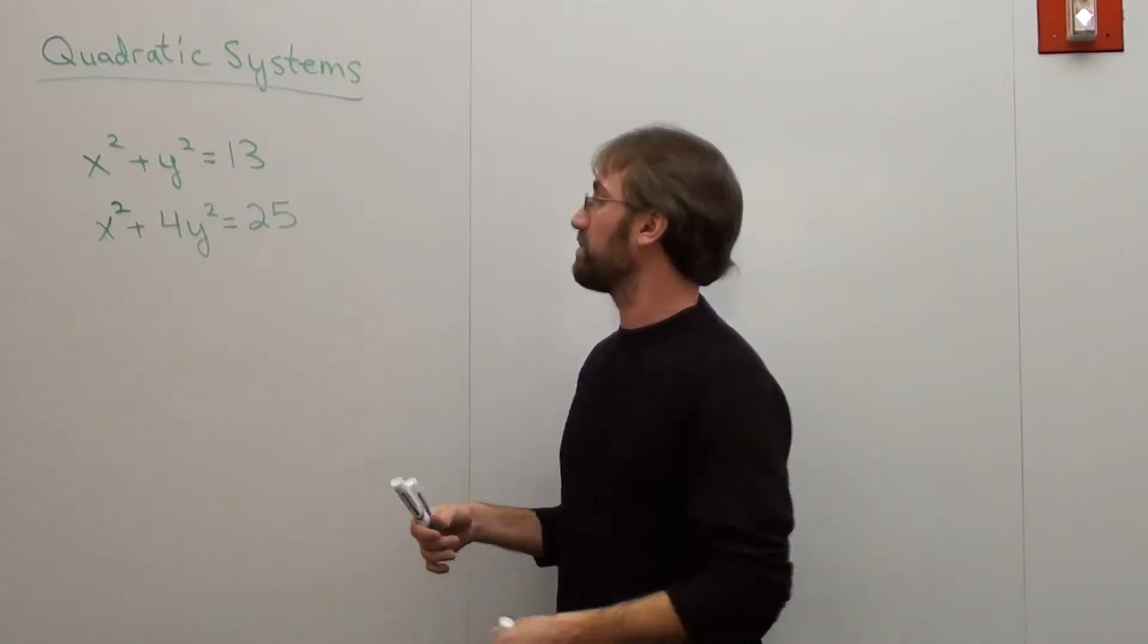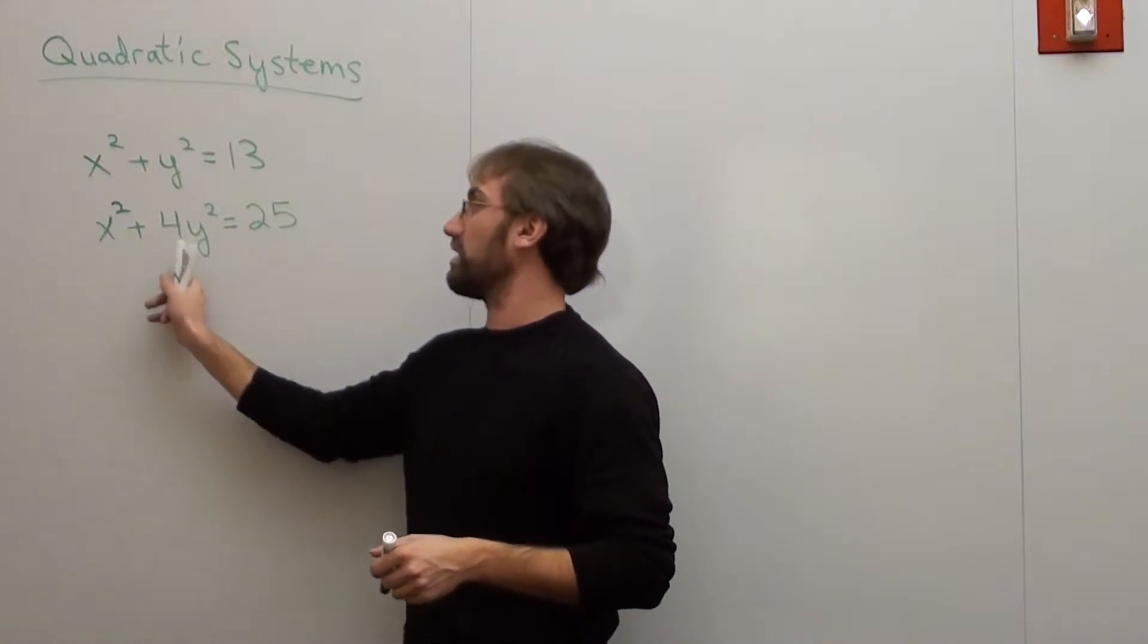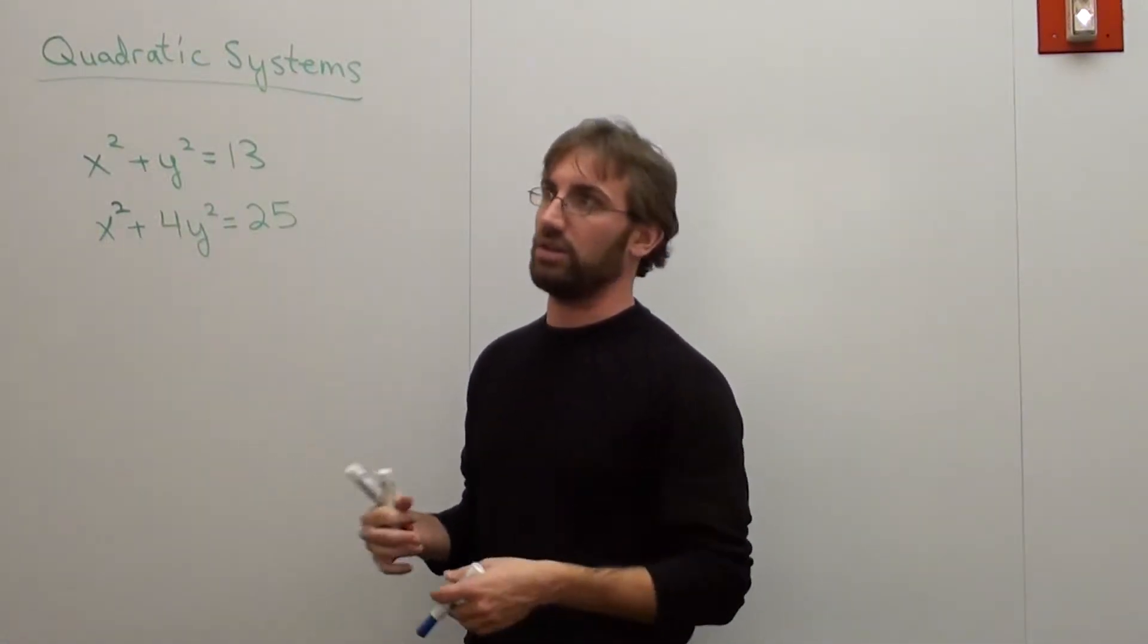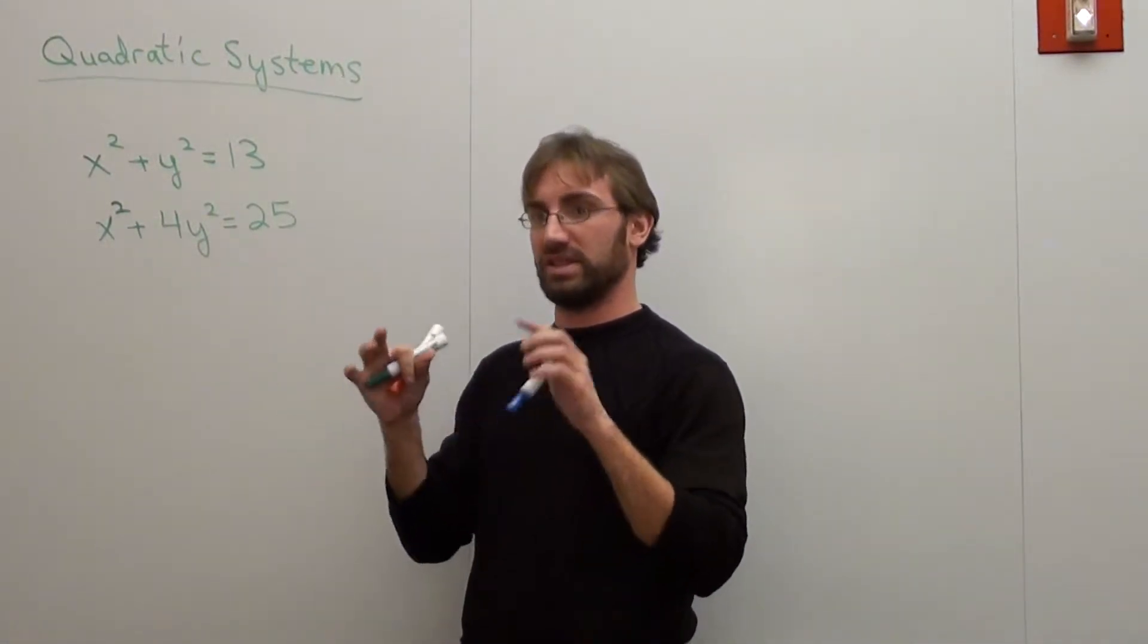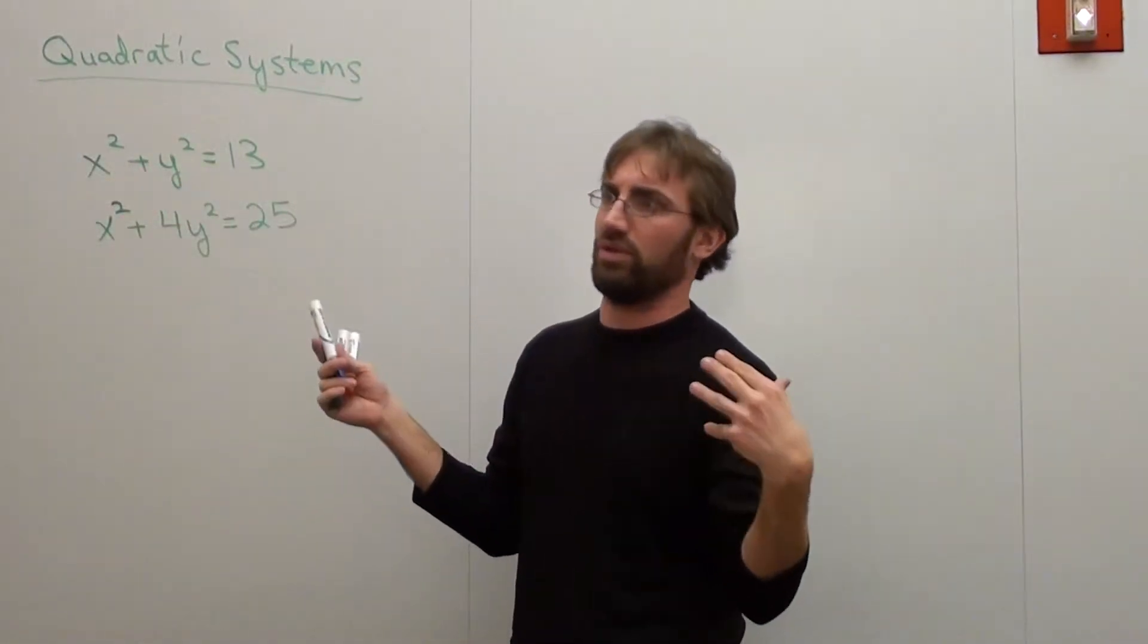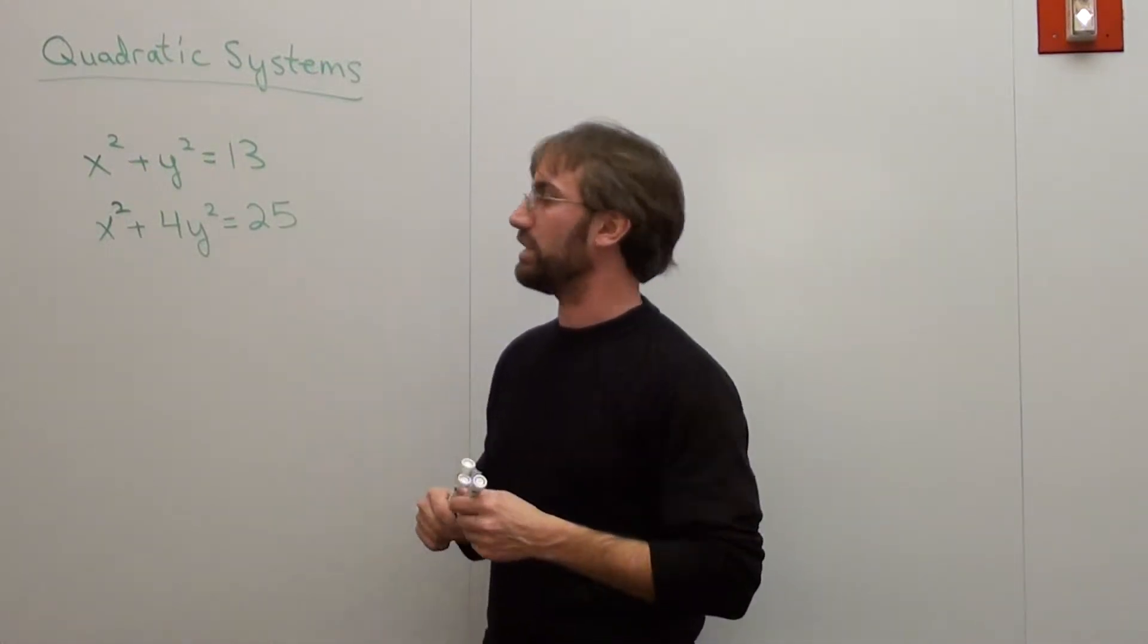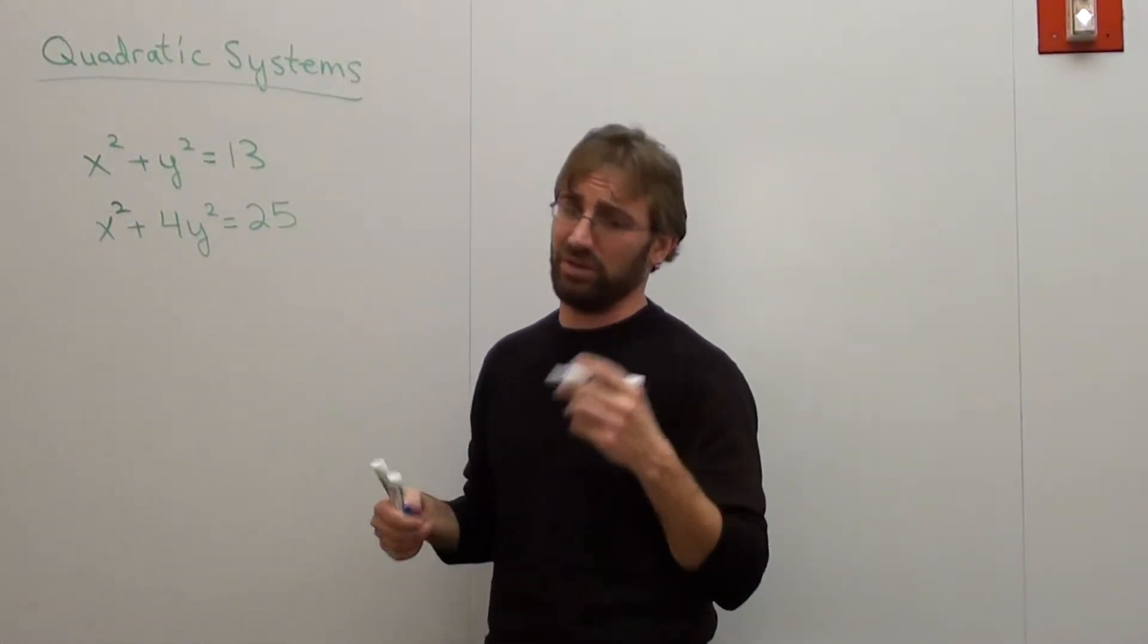I know it's an ellipse because what I have to do is I have to get it set equal to 1 because these values aren't equal, so it can't be a circle automatically. The x squared and the y squared have to be the same. The same number has to be underneath the x squared and the y squared. If you look back at the form for an ellipse, a hyperbola, a circle, you see it. Or a parabola in general.